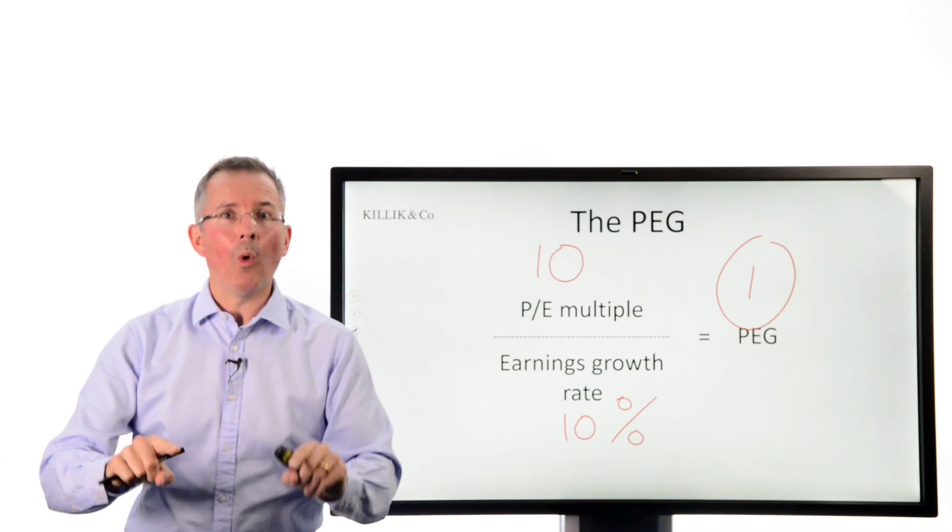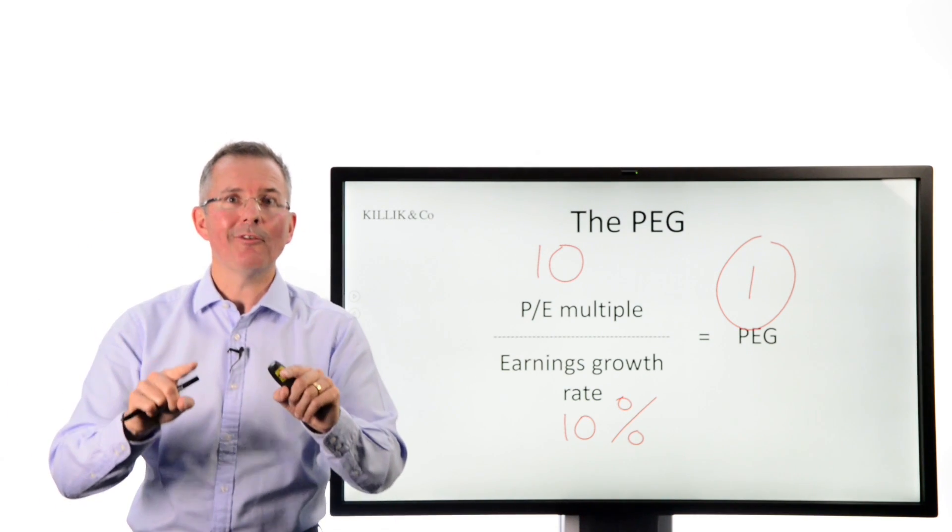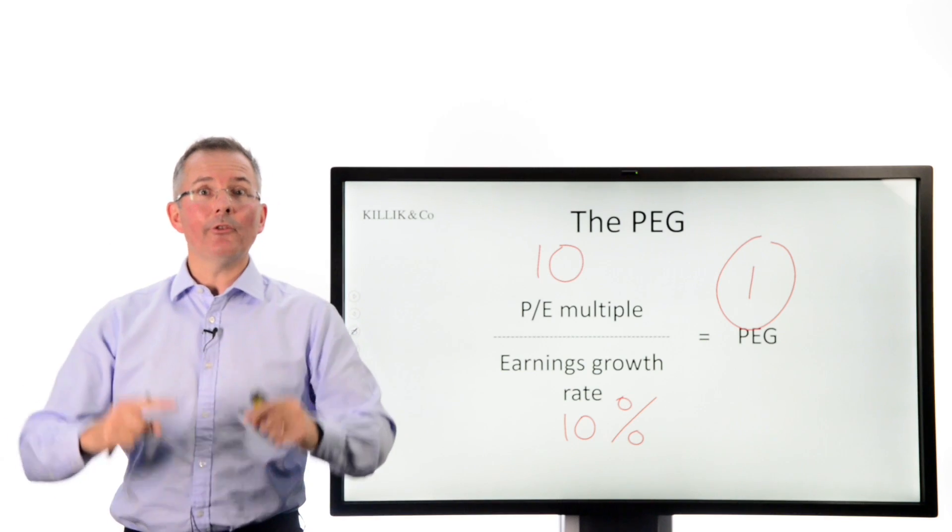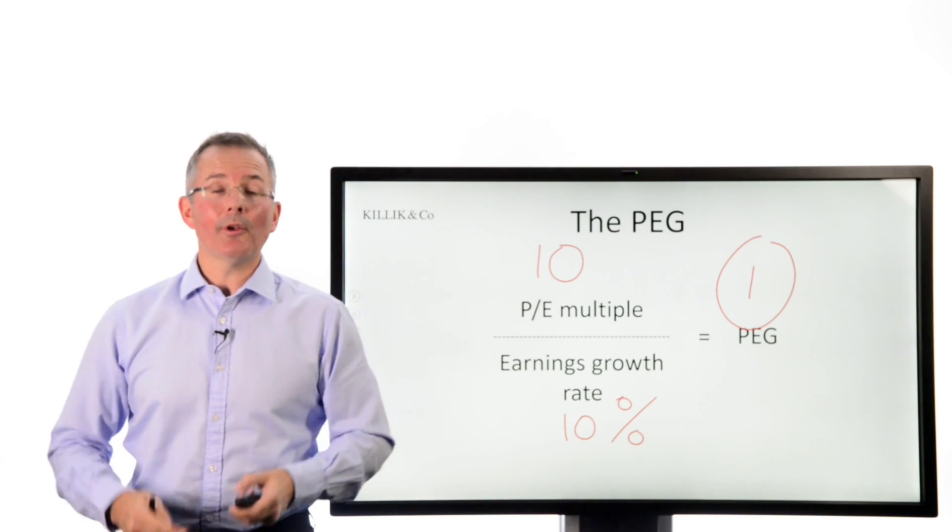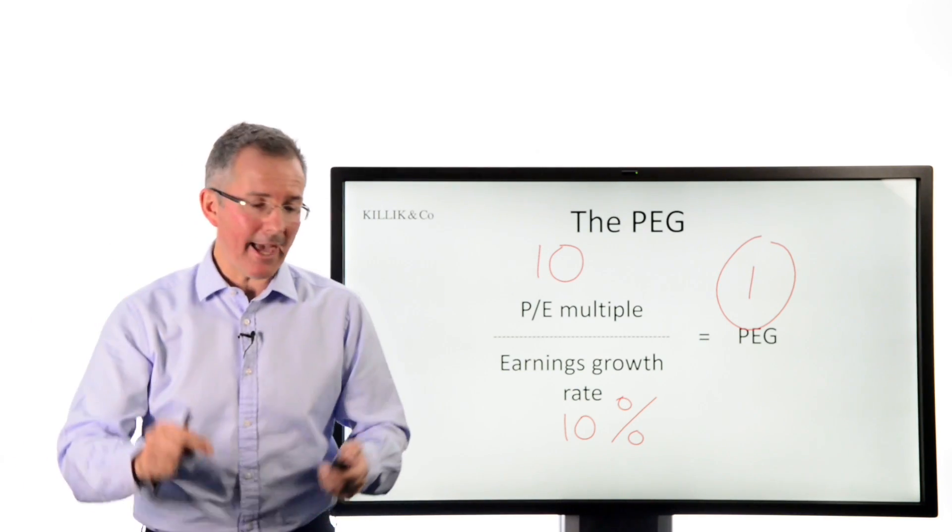Where the PEG's below 1, you might have a bargain on your hands. The PE is kind of under-reflecting future growth. Above 1, it's over-reflecting future growth. The share's expensive. And that's kind of where the PEG tries to take you.